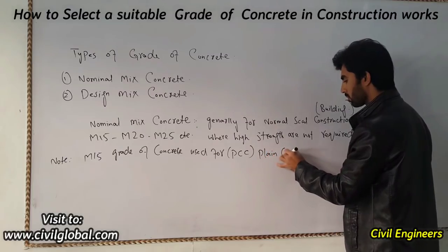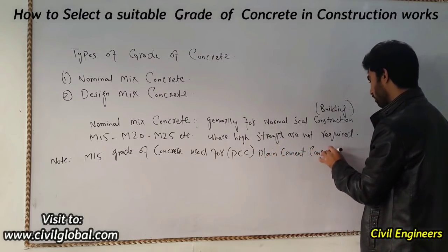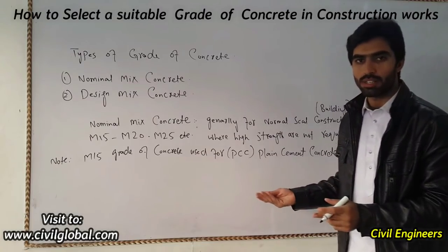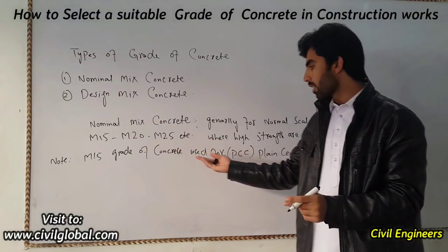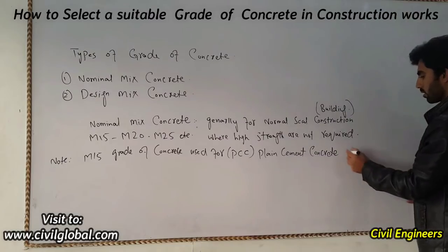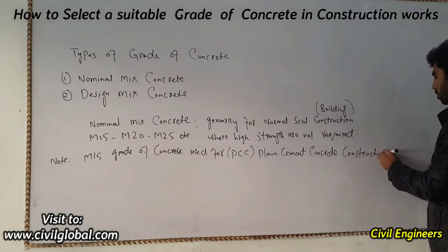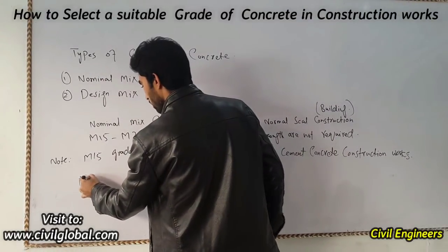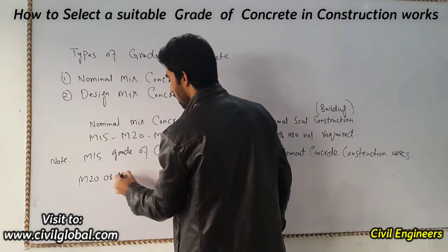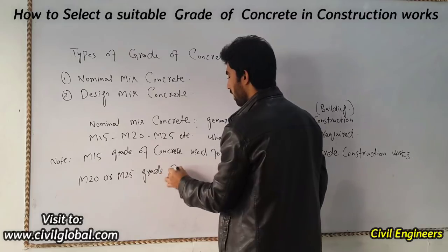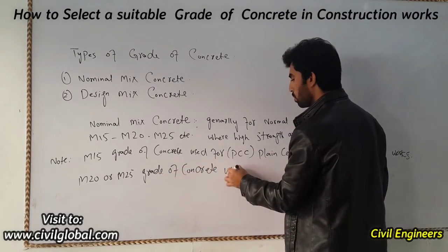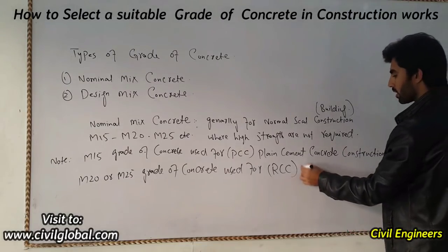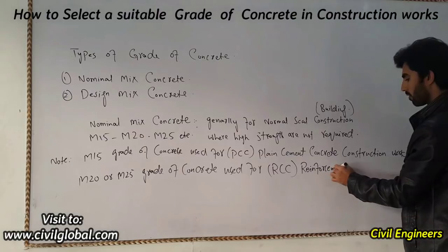PCC — Plain Cement Concrete — is where reinforcement is not required. We don't use reinforcement in PCC, so M15 grade of concrete is used for Plain Cement Concrete construction works. M20 or M25 grade of concrete is used for RCC — Reinforced Cement Concrete — construction work, because we use steel in RCC when high strength is required.